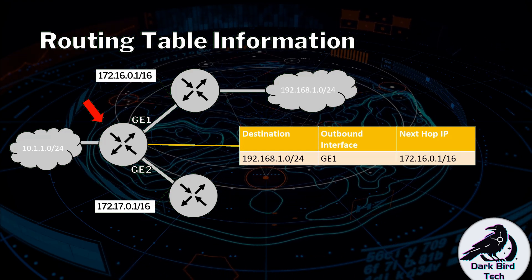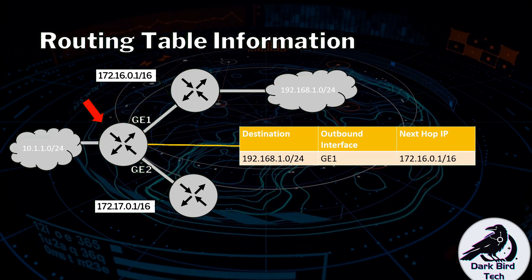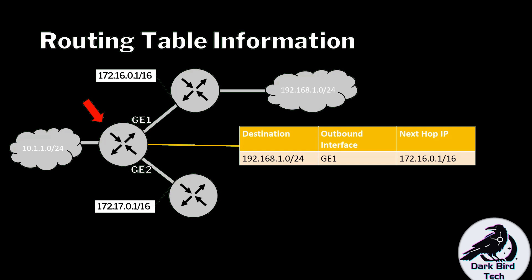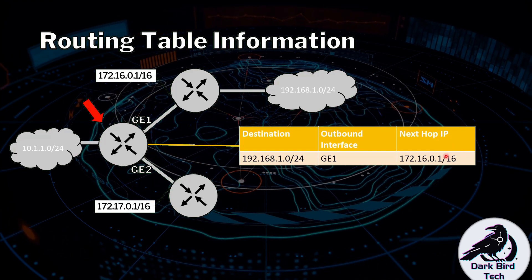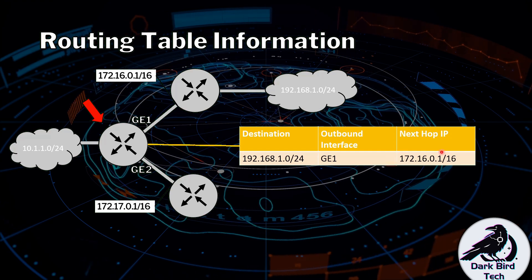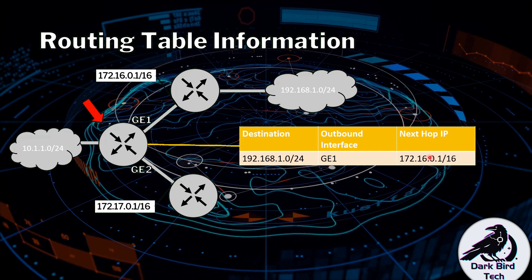When we look at different vendors in networking, their routing tables will contain different information and be formatted differently. But the three key pieces of information will almost always be there: the destination network, the outbound interface of the current router — for example, GigEthernet 1 as the exit interface when forwarding to that destination — and then the next router's IP address, such as 172.16.0.1. It might also track the subnet mask for the next hop, though that's not necessarily needed, as it treats it as a unicast address.